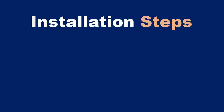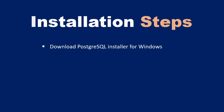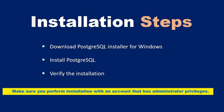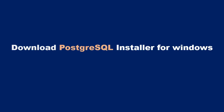Let's take a look at the steps we are going to follow to complete the installation of PostgreSQL. We are going to start off by downloading the PostgreSQL installer for Windows. Once we've downloaded it, we will then install PostgreSQL and verify the installation. If you are running Windows 8 or Windows 10, you will need to install PostgreSQL on an account that has administrative privileges.